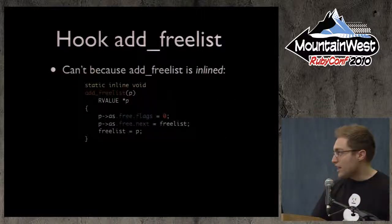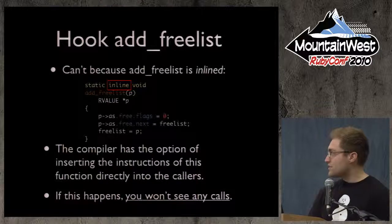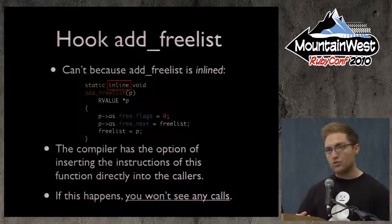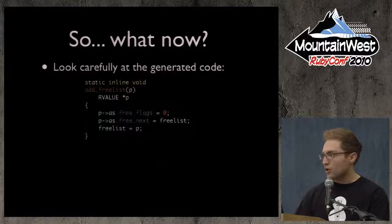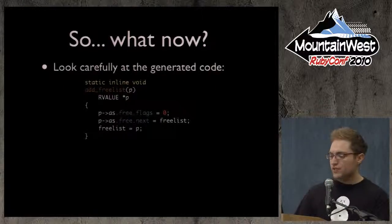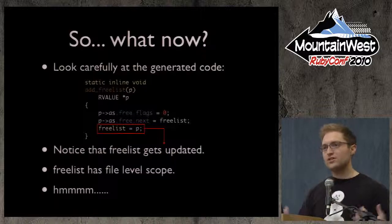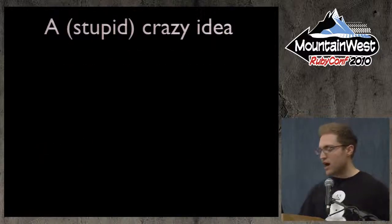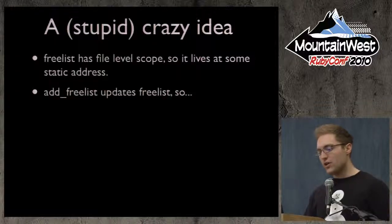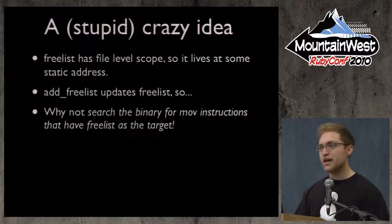We can't hook add_freelist the same way because it's inlined. The 'inline' keyword suggests to GCC: output a set of instructions, take those instructions, insert them into whoever called me, and optimize from there. If the function is inlined, you won't actually see any calls to add_freelist. But if we carefully study this snippet of code, we notice that freelist is getting updated — and freelist has file-level scope, so it just lives at some static address. So why don't we do something really stupid? Why not search the binary for move instructions that have freelist as the target, and just overwrite all of those?